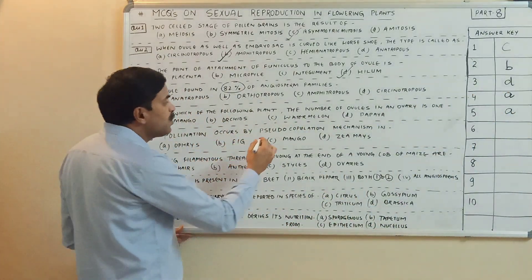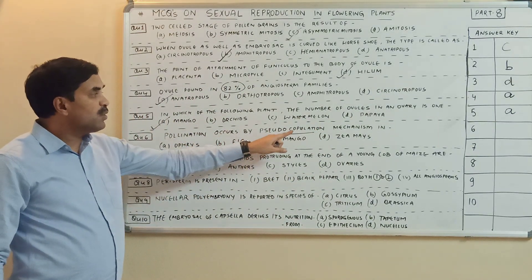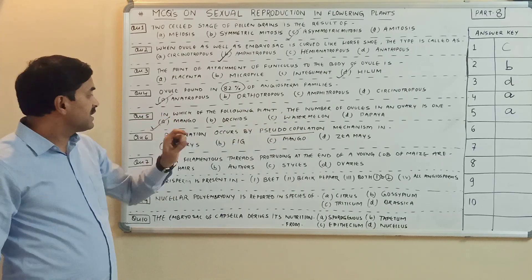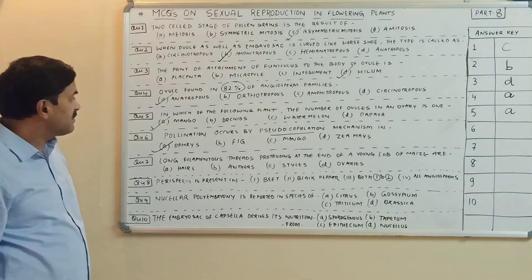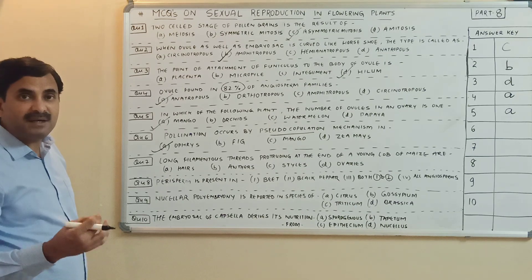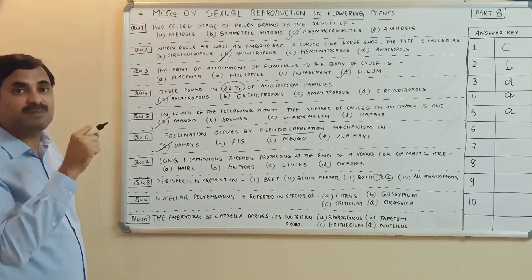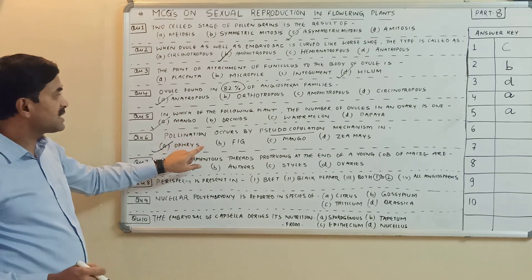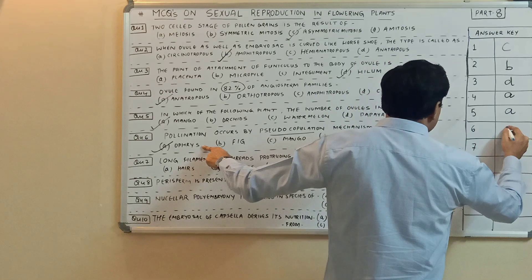Pollination occurs by pseudo-copulation mechanism. It is given in your NCERT that Ophrys is the plant in which pollination occurs by pseudo-copulation, where the male is attracted toward the flower which resembles the female. Question number six has the answer A.